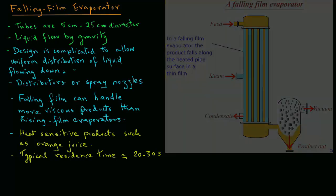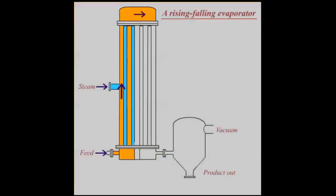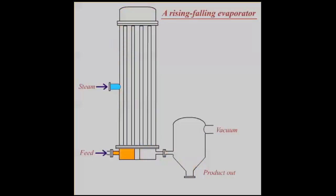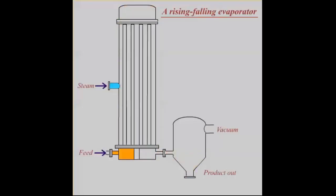There is another variation of an evaporator design that involves a rising film section in the beginning part of the evaporator and then a falling film section in the second part. The liquid feed first goes through the rising film section where the feed gets pre-concentrated and then it is allowed to fall by gravity in thin films in the falling film section.